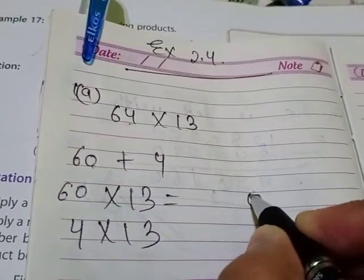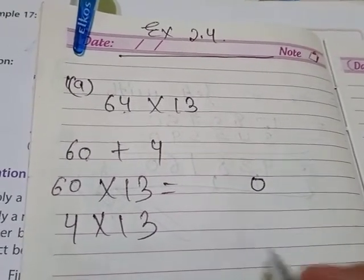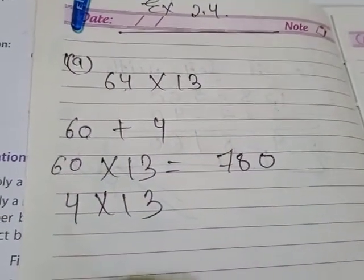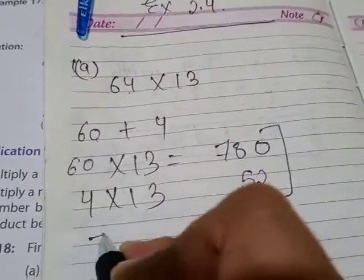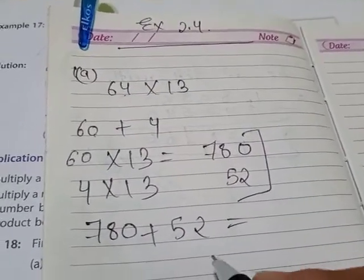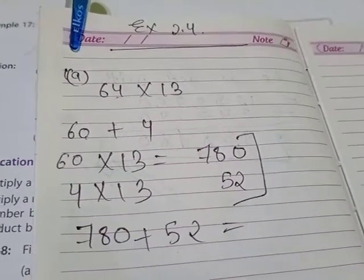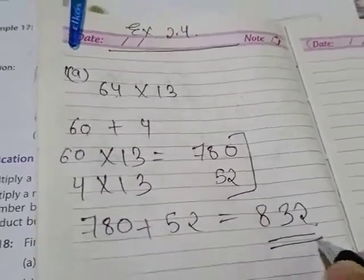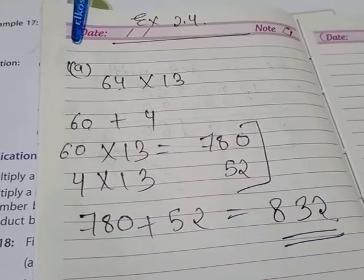We write 0 here, then 13 into 6 is 78, giving us 780. Then 13 into 4 is 52. Now we add both these numbers: 780 plus 52. That gives us 832. This will be your answer: 832.